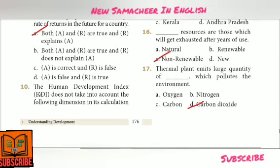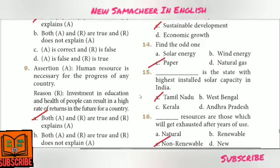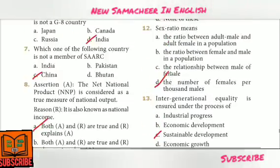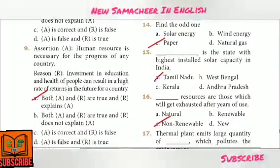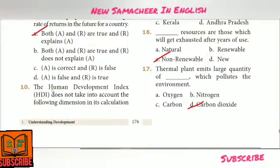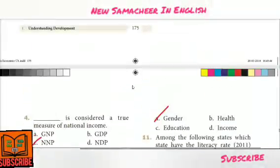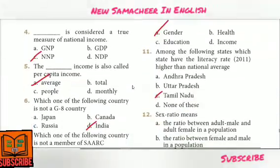Tenth question: The human development index does not take into account the following dimension in its calculation — Answer Option A: Gender.